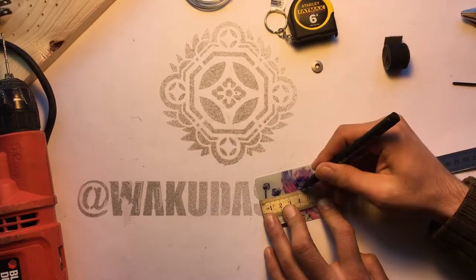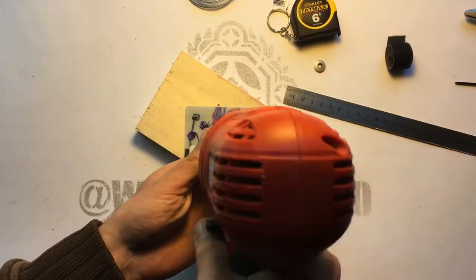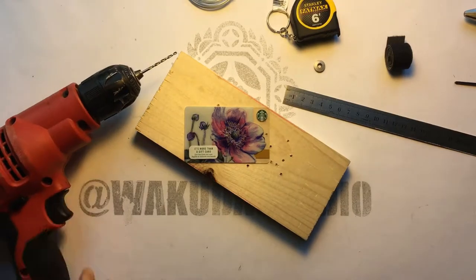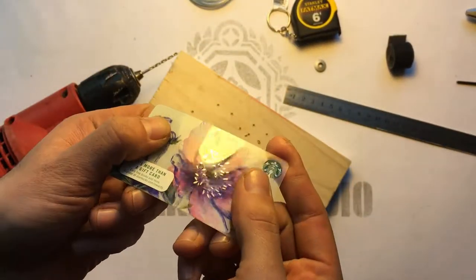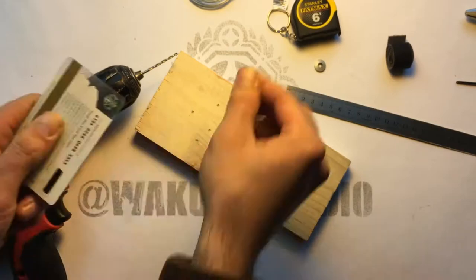The first thing we'll do is drill a hole directly in the center of our plastic card which will be the holding center point for the compass.